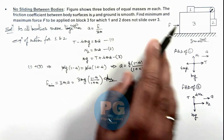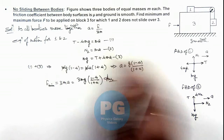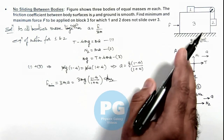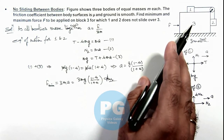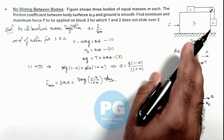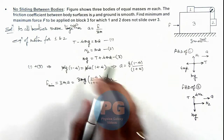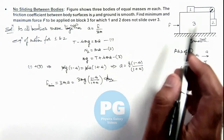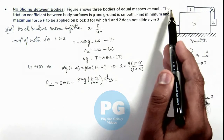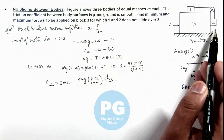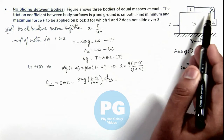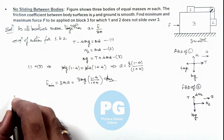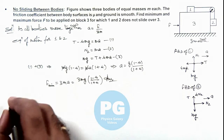As force increases, the acceleration increases, and with increasing acceleration, blocks 1 and 2 will have a tendency to move in the opposite direction with respect to block 3. At the maximum value of force, block 1 has a leftward sliding tendency and block 2 will have an upward sliding tendency. So we redraw the free body diagrams of 1 and 2.